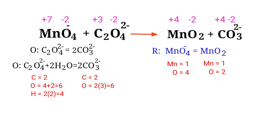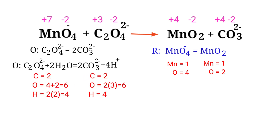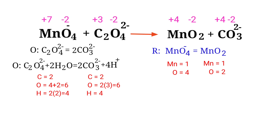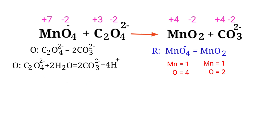The oxygen atoms are balanced. Now we need to balance the hydrogen atoms; to do this, produce H plus ions. Then balance the oxygen atoms again as needed by producing water molecules.